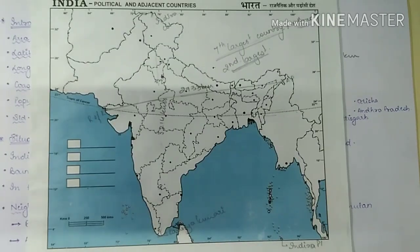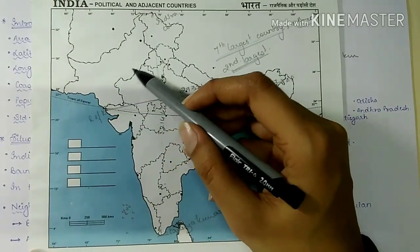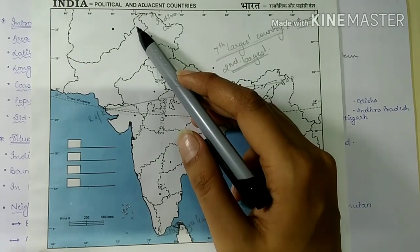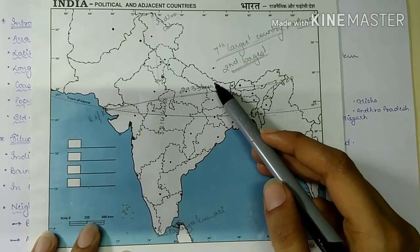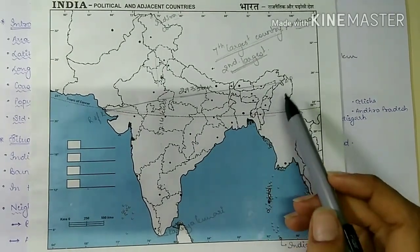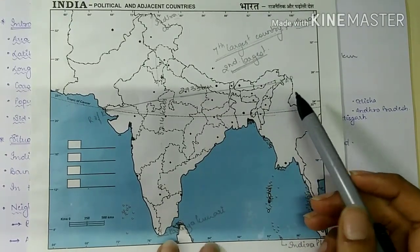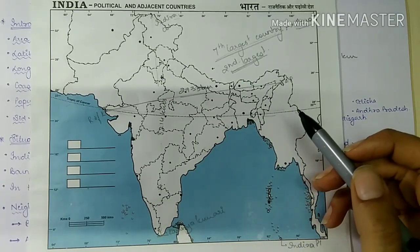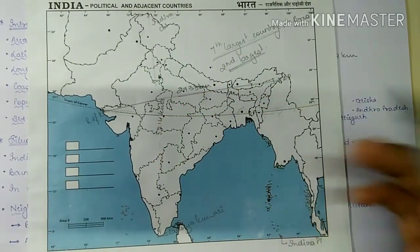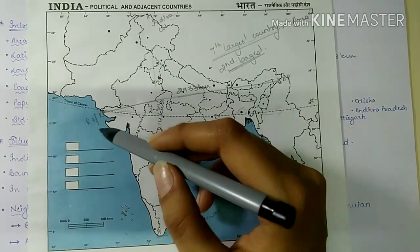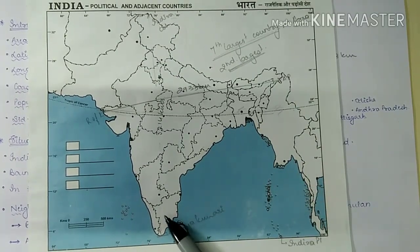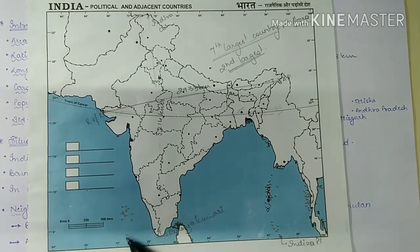India is bordered by Pakistan to the west, Afghanistan to the northwest, China to the north, Nepal and Bhutan to the north, and Bangladesh and Myanmar to the northeast. The southern borders are guarded by oceanic coastline — the Arabian Sea, Bay of Bengal, and Indian Ocean. Across the sea, our close neighbors include Sri Lanka and the Maldives.